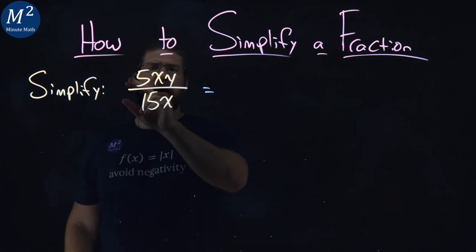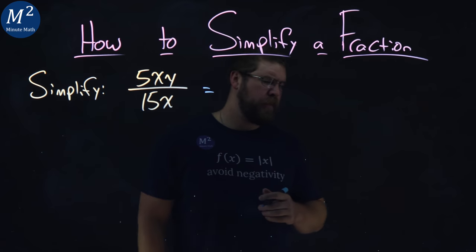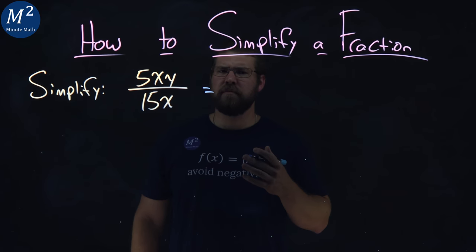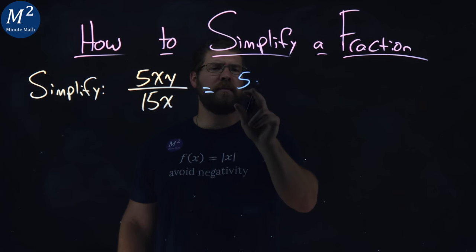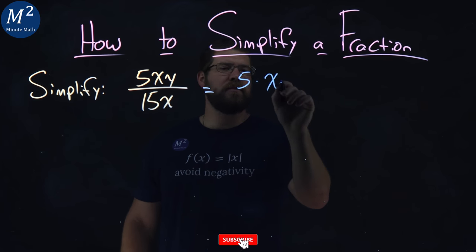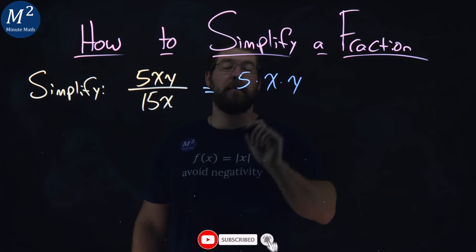Let's look at the numerator, 5xy. Well, 5 is a prime number, so we can't break that down anymore. I'm going to write this out with dots to show the separation: 5 times x times y.